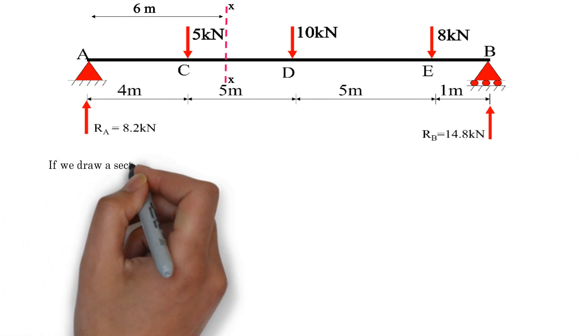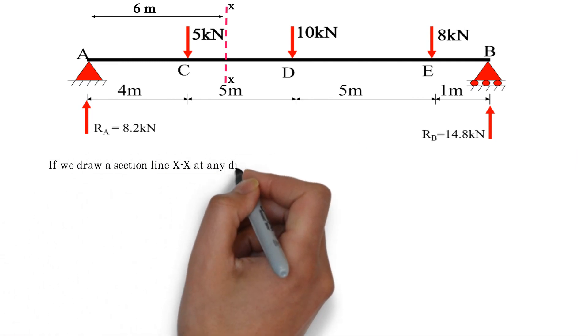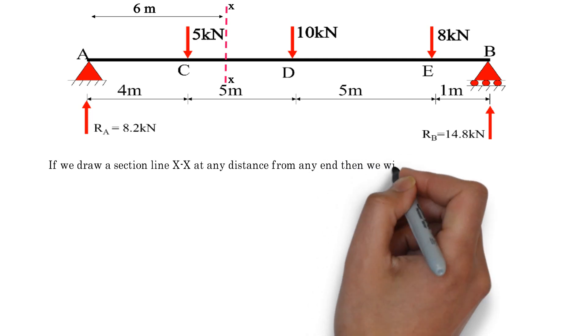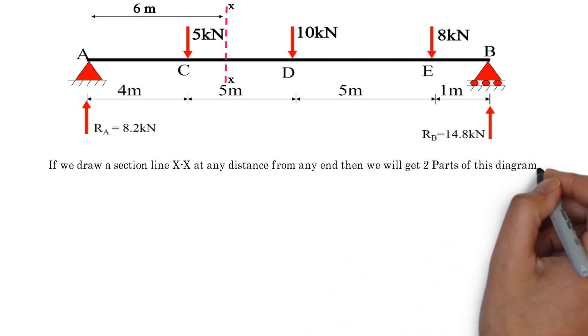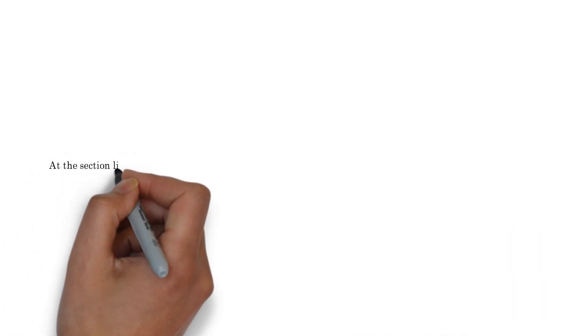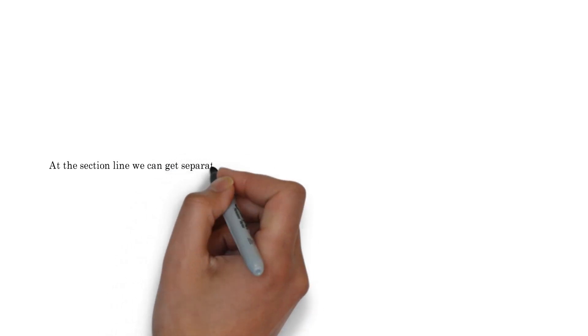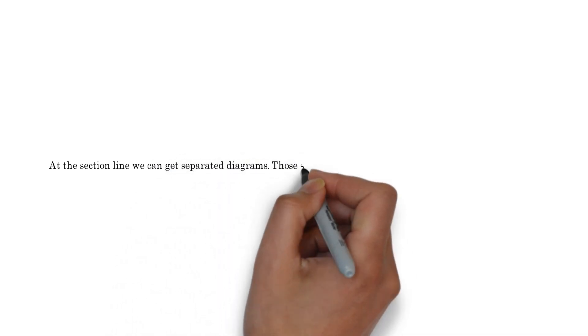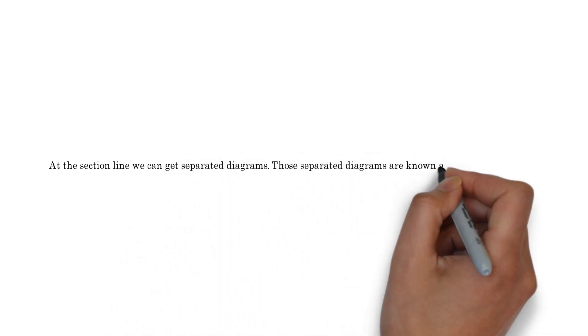If we draw a section line XX at any distance from any end, then we will get two parts of this diagram. At the section line we can get separated diagrams. Those separated diagrams are known as free body diagram.